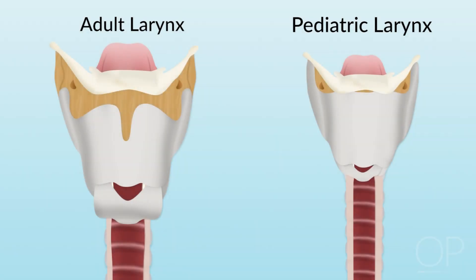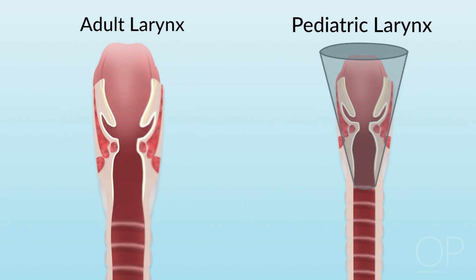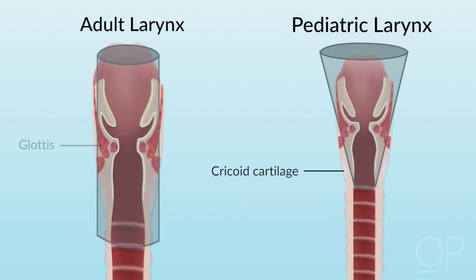The pediatric larynx differs from the adult larynx in several important ways. First, the pediatric larynx is funnel-shaped, with the most narrow point being the subglottis within the cricoid cartilage, whereas in an adult, the narrowest point is the glottis itself.